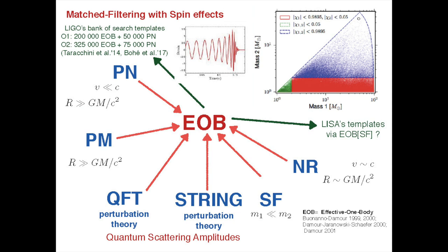For matched filtering you need to know the signal for all possible values of masses of the two bodies and spins. It was expected astrophysically that black holes would be spinning with near-maximum spin — very high spin, possibly in any direction — so you have the full phase space of two masses and two spins with all their angles. Actually, all observations are compatible with nearly zero spin, so it's not so urgent to have maximum spin formulas all correct, but certainly in the future one will observe highly spinning black holes.